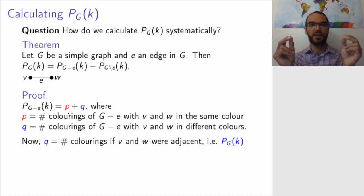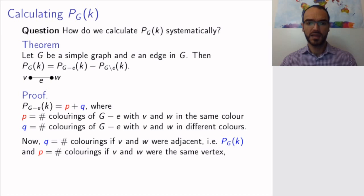So if we have removed the edge, we may color v and w in the same color, but now we're looking at colorings where they are different, and so that's P_G(k). p is the number of colorings if v and w were the same vertex. So since we're coloring them in the same color, the number of such colorings is exactly the same as if these vertices were glued together, which is exactly the situation in the contracted graph G contracted E.